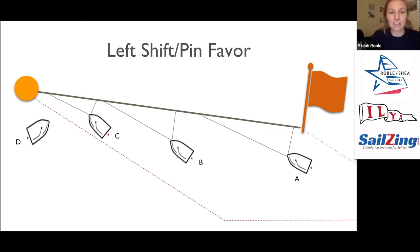One thing I wanted to bring to everyone's attention is how with a shift change, your distance to the line changes. So let's say here you have a left shift or a pin end favored start. You can see your actual distance to windward to the line is quite short, but the distance to sail to the line becomes a lot longer in a left shift.